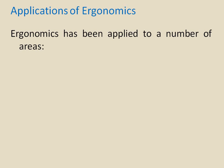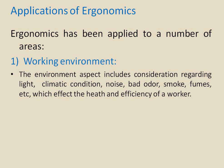Ergonomics is applied at various areas. The first is the working environment. The place where workers work should have proper lighting facilities and suitable climatic conditions — temperatures should be within human tolerance, noise should be less, there should be no bad odors, unpleasant smells, or harmful fumes. These things must be taken care of so that workers' health is not affected and efficiency remains high.